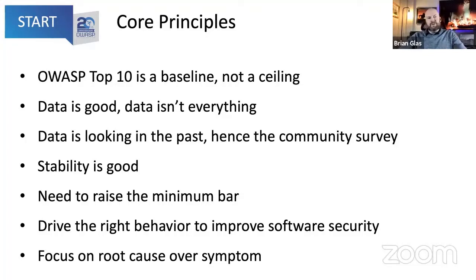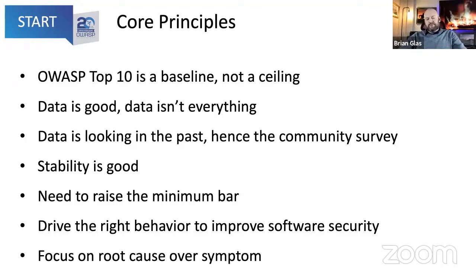The next core principle: data is good, but data isn't everything. We wanted to base as much as possible on the data call, but we also needed to take it with a grain of salt — understand the limitations and what it could tell us. One of those limitations is that data looks into the past. When we make a data call, we're getting data from 2017 through 2021, and it isn't just about findings from a particular year.